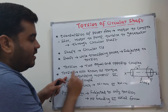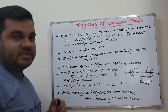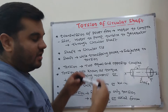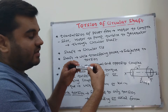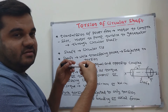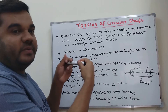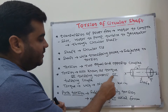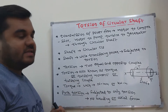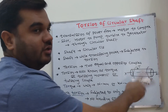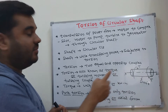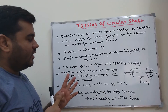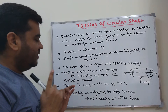Torsion is also known as torque, or sometimes as twisting moment. It is called twisting moment because the result of this couple leads to the twist of the shaft. It is also called twisting couple, since applying two equal and opposite forces forms a couple. So you can call it torque, twisting moment, or twisting couple.